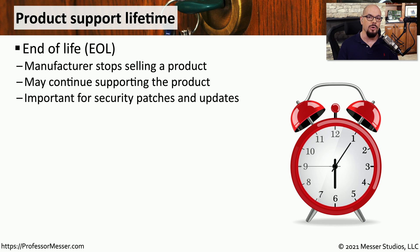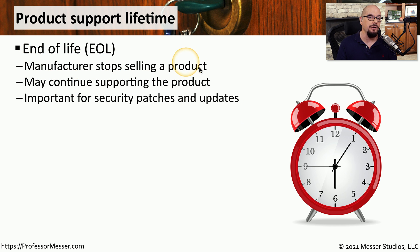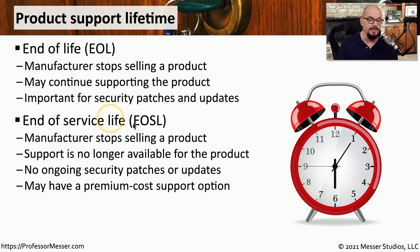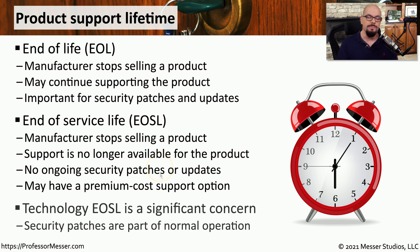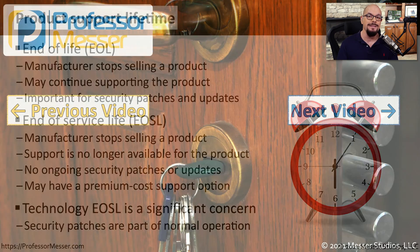Another important security concern when working with third parties is understanding when a product's end of life might be — when a manufacturer stops selling and supporting a product. This is especially important if you're relying on that vendor for ongoing security patches. When a manufacturer announces end of life, they may stop selling but continue support. The next phase is end of service life, or EOSL, when the vendor is no longer selling or supporting the product. You won't receive additional security patches, though there may be an option to pay a premium fee to continue receiving them. Security teams need to understand these timelines to maintain the security of their systems.